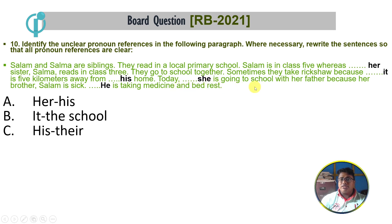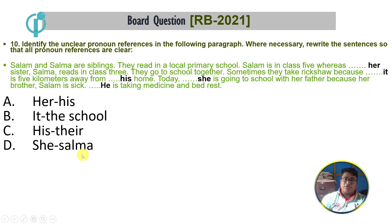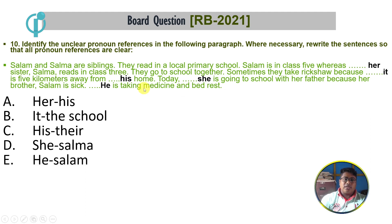Today, she is going to school with her father. So 'she' here refers to Salma. We need to write this clearly: 'Salma is going to school with her father, because her father Salam is sick and he is taking medicine.'